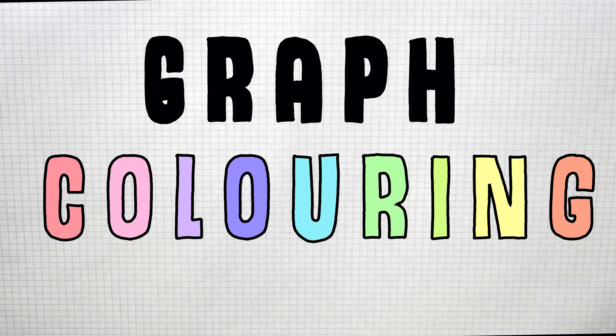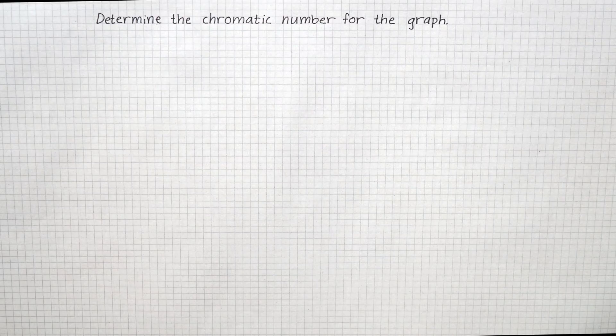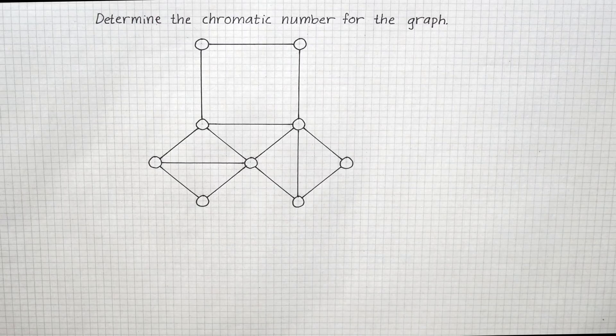We'll be using graph coloring to determine the chromatic number for this graph. We'll pick a random node as our starting point and give it a color, let's say red.